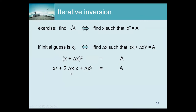This update equation is quadratic, and solving it exactly would require a square root — which is what we wanted to avoid. But we only need to guarantee that the solution gets better, not that it's exact. If our initial guess is not too bad, then x₀ is larger than Δx, meaning the Δx² term is the smallest. So we drop it, converting the quadratic into a linear equation.